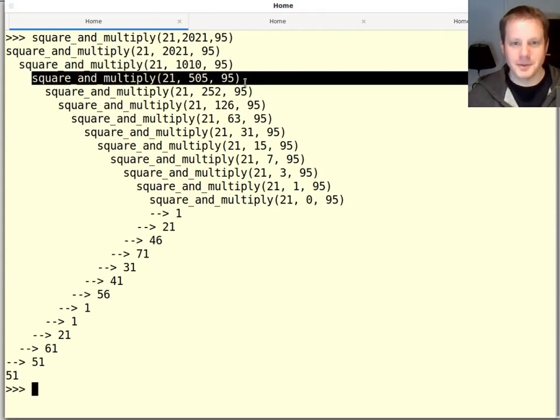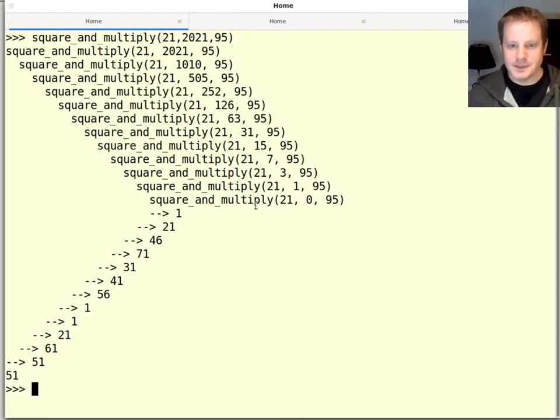But how many steps did it have to go down? Not 2,000 steps. Not even 200 steps. In fact, the number of steps here is maybe 11. It's proportional to the log base 2 of that number.